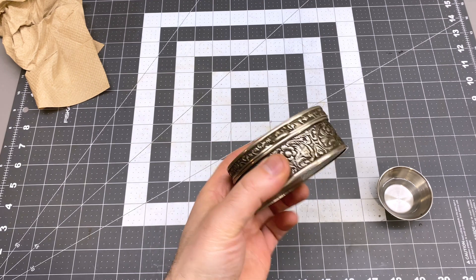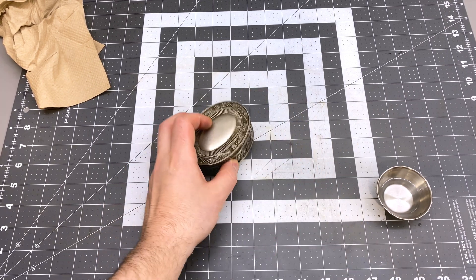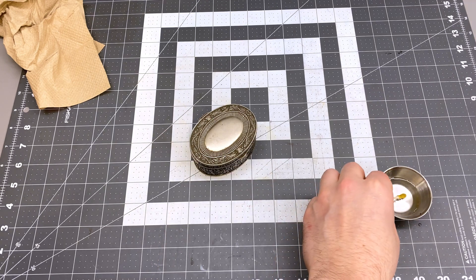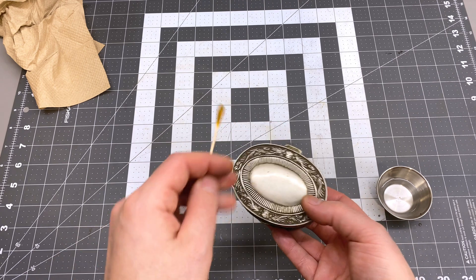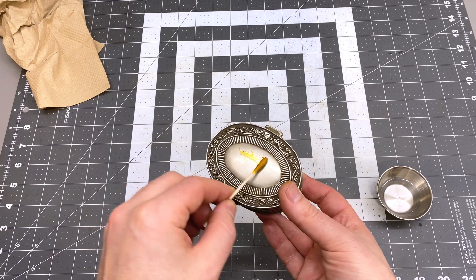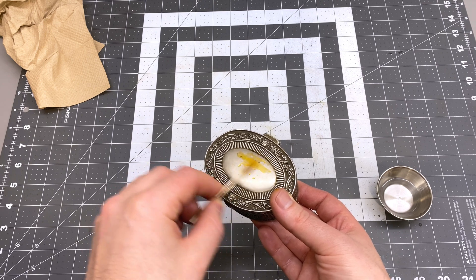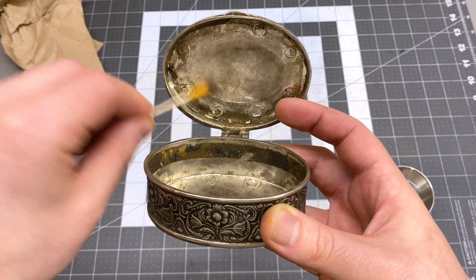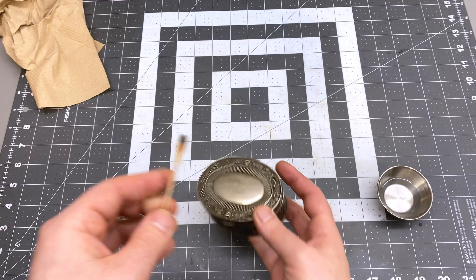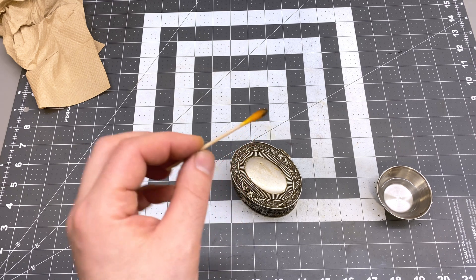I'm going to try another one on something I have that I don't know that it has lead in it, but I feel like it probably does. It's an old, maybe pewter case, so let's see if we get anything. And I can already see that it is changing color a bit, so there is likely lead in this metal, whatever it happens to be.